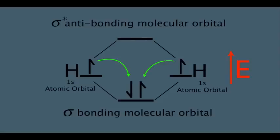The sigma bonding molecular orbital in this example can also be termed the HOMO — highest occupied molecular orbital — meaning it is the highest orbital that is occupied by electrons. This makes the sigma anti-bonding molecular orbital the LUMO — lowest unoccupied molecular orbital. In more complex organic chemistry diagrams with more bonding and anti-bonding orbitals, there will always be a highest occupied orbital (HOMO) and a lowest unoccupied orbital (LUMO). We'll learn in another online lecture why these particular orbitals are so important to focus on.